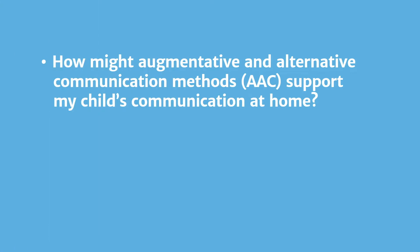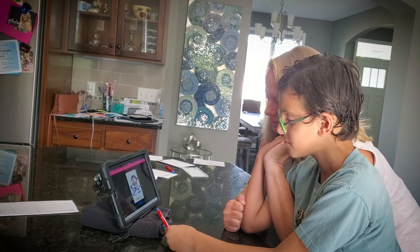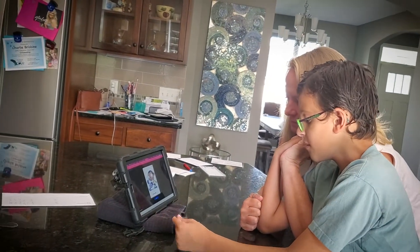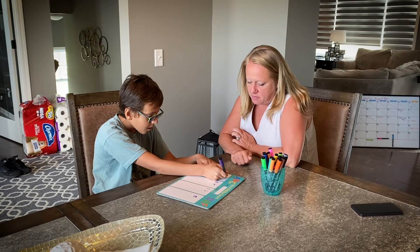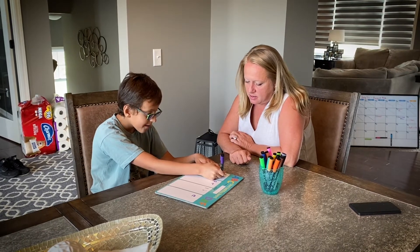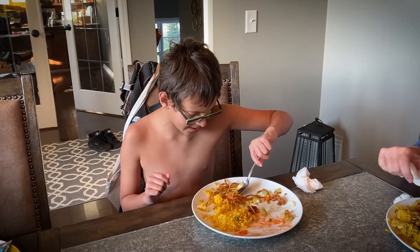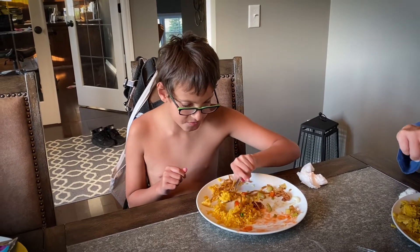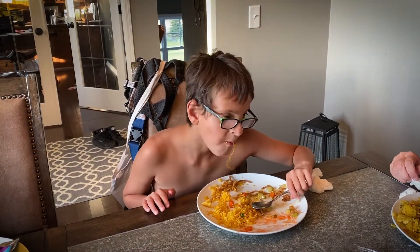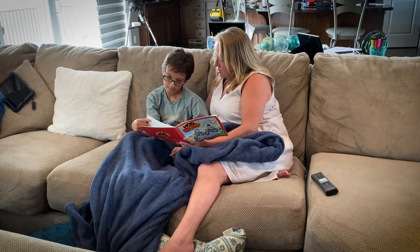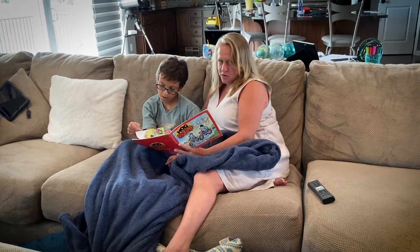How might augmentative and alternative communication methods, or AAC methods, support my child's communication at home? Start by considering your child's current IEP for communication goals. Think about ways to support those goals at home during familiar activities that are part of a routine. For example, talk with your child during mealtime by making comments about the meal and all the things that happened during the day, or that you are planning to do. You can also read with your child to support communication skills.